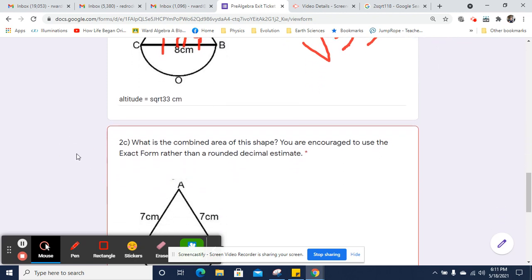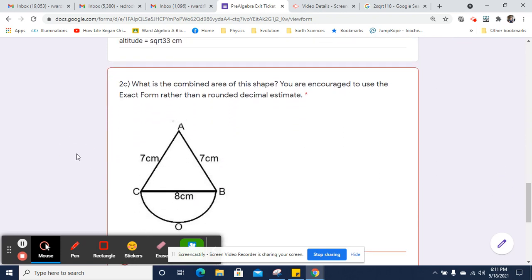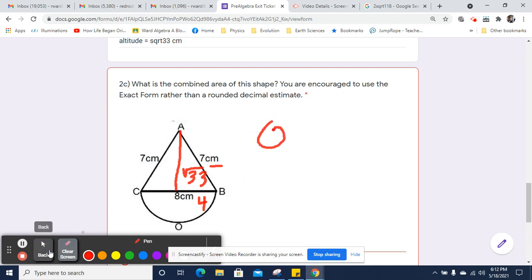So now what is the combined area of this shape? So we know now that we need some stuff. We know that this is the square root of 33 centimeters. We know that the radius is 4. We know we have a semicircle. We know the base of that triangle is 8. So what we're going to do is we're going to add half...